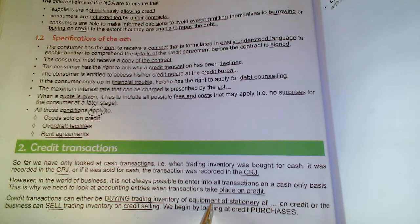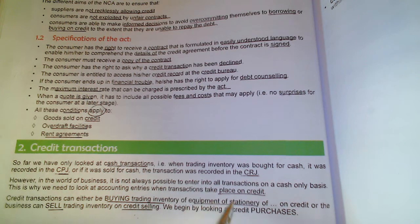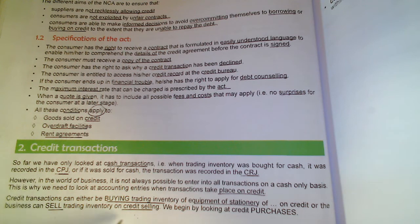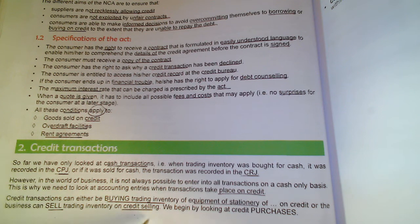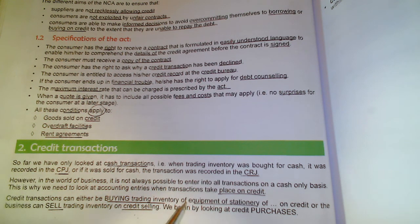If we buy on credit and it goes to the creditors journal, we create a liability because we owe that money. If we sell trading inventory on credit and people owe us the money, an asset is created — that goes to the debtors journal. People that owe us money are debtors, and people that we owe money to are creditors.